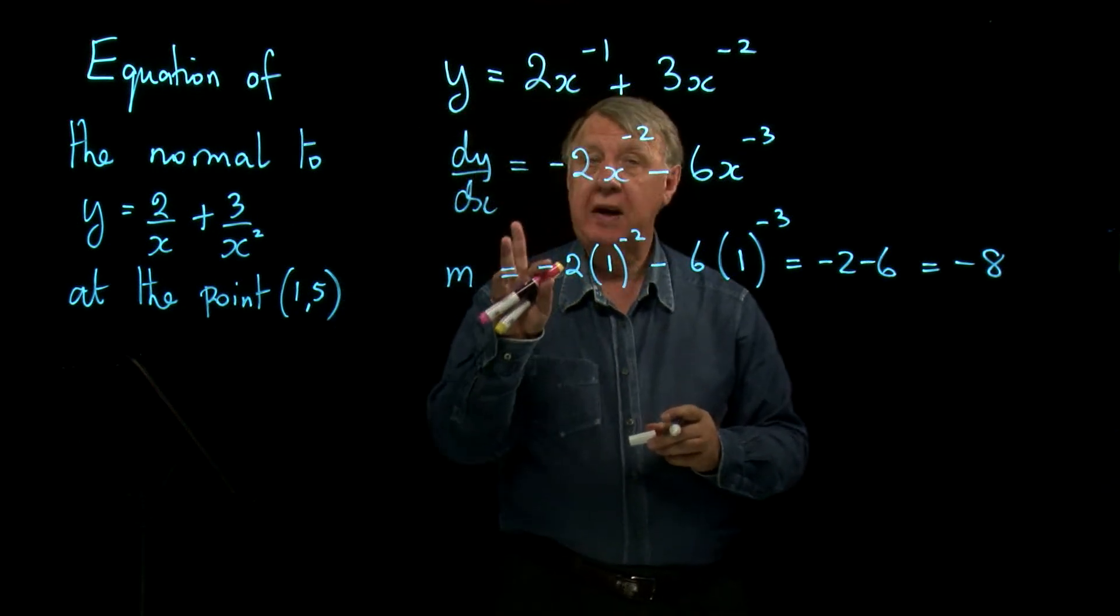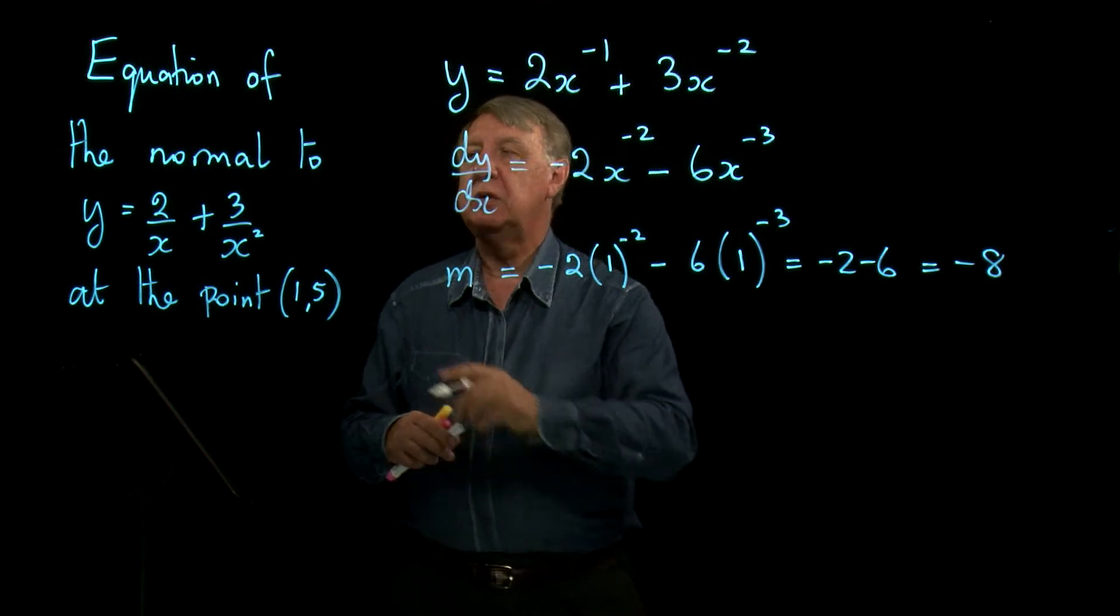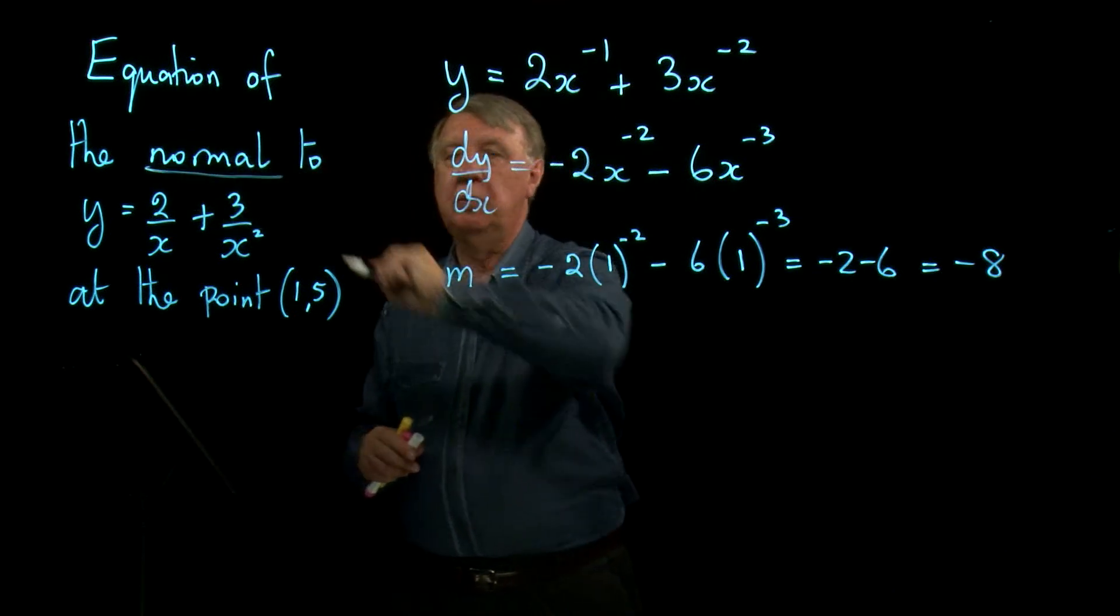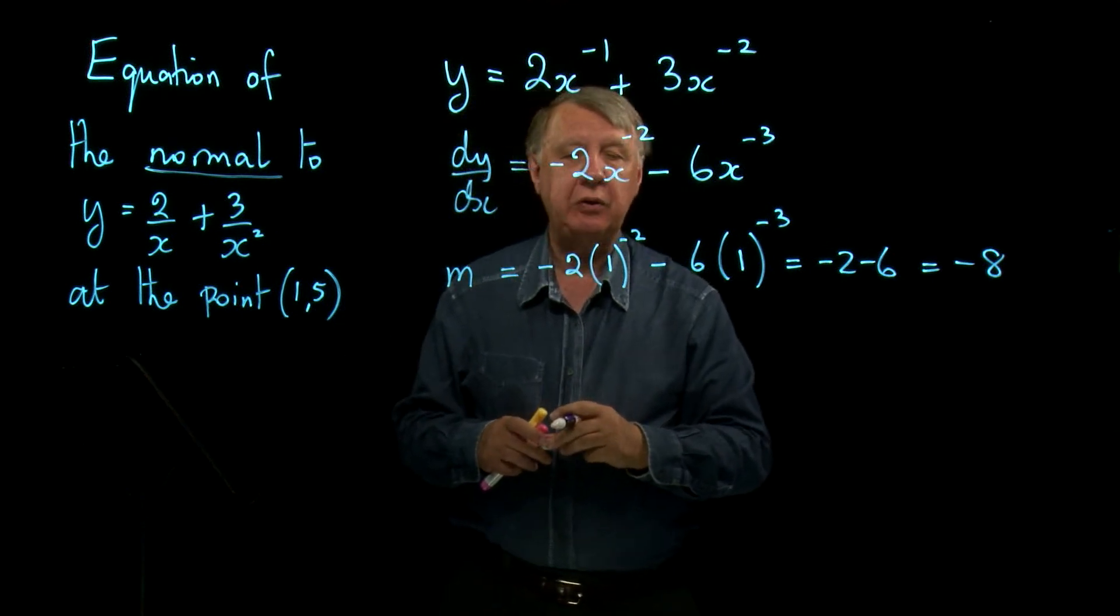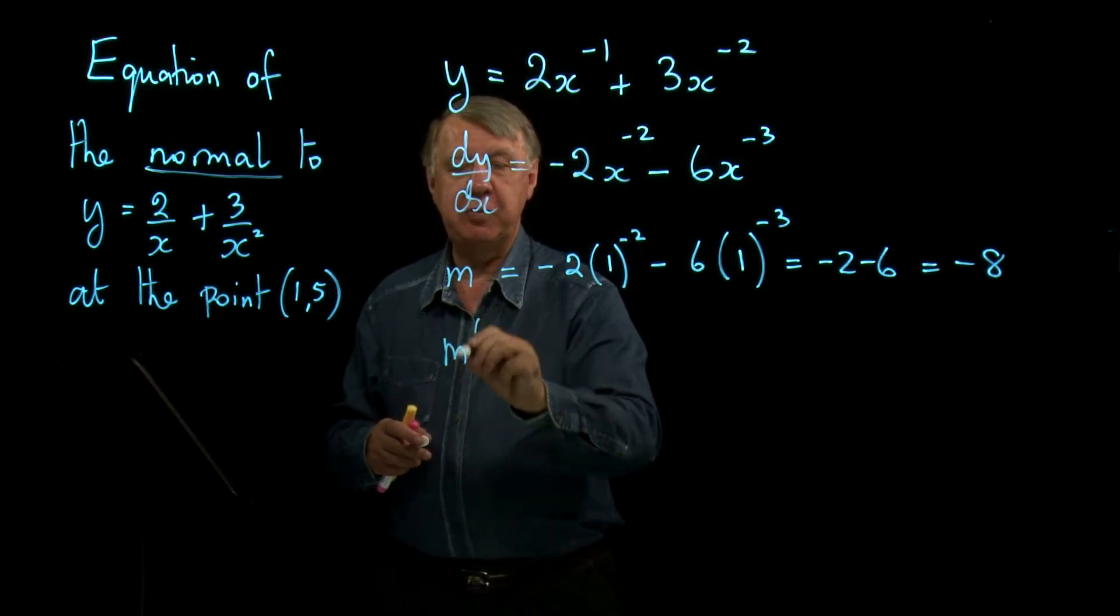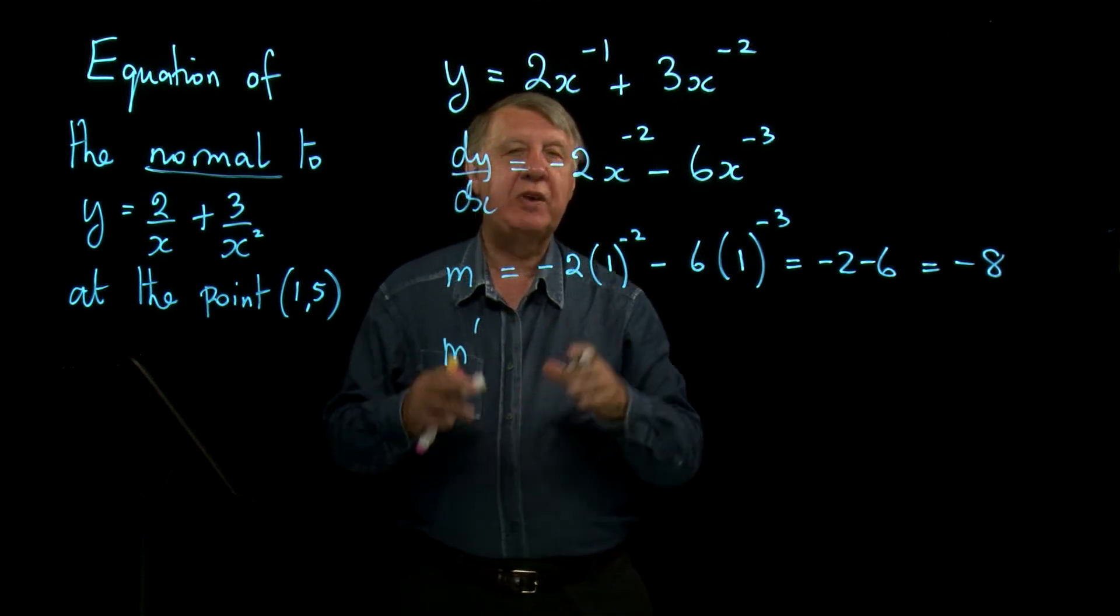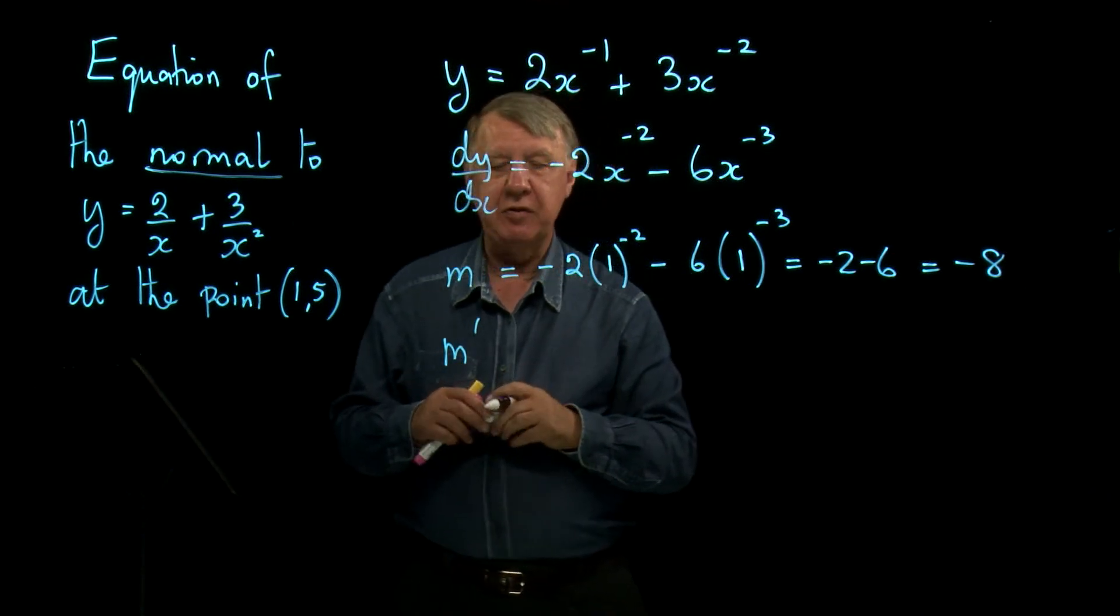So that's the gradient of the tangent. Now, I want the gradient of the normal. So I need my old friend m1, m2 equals negative 1. So m dash, remember I'm going to use m dash for normal as opposed to m for tangent.